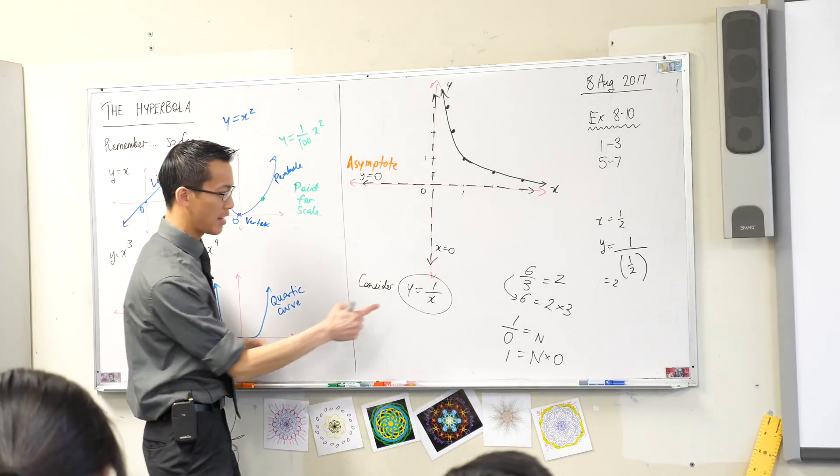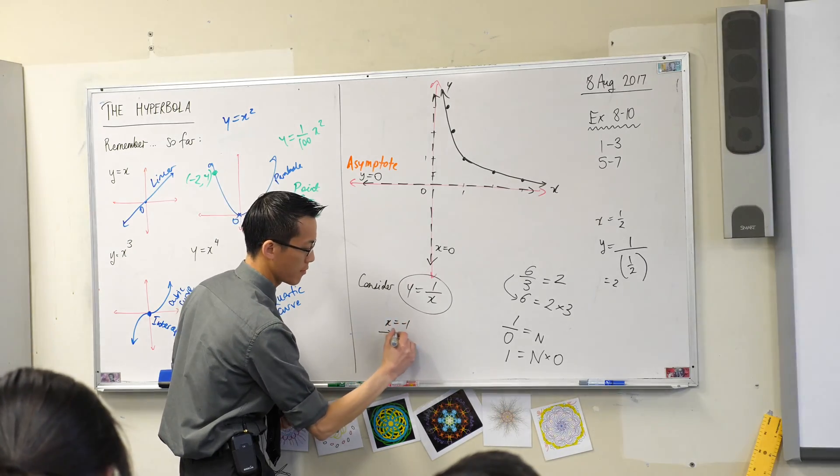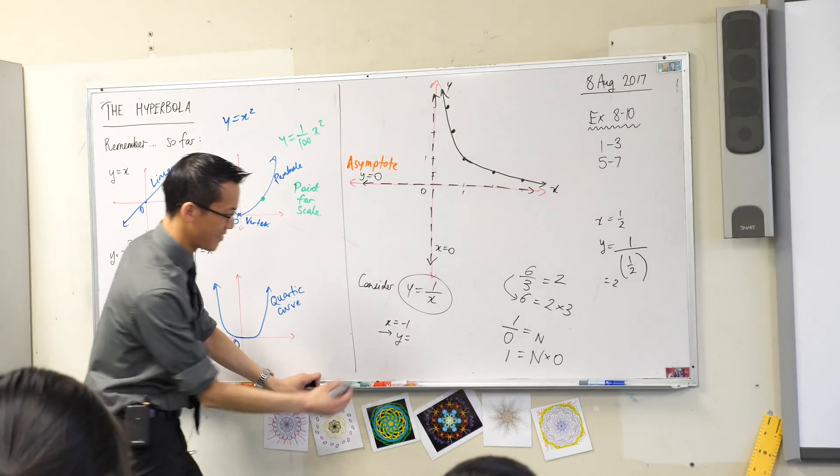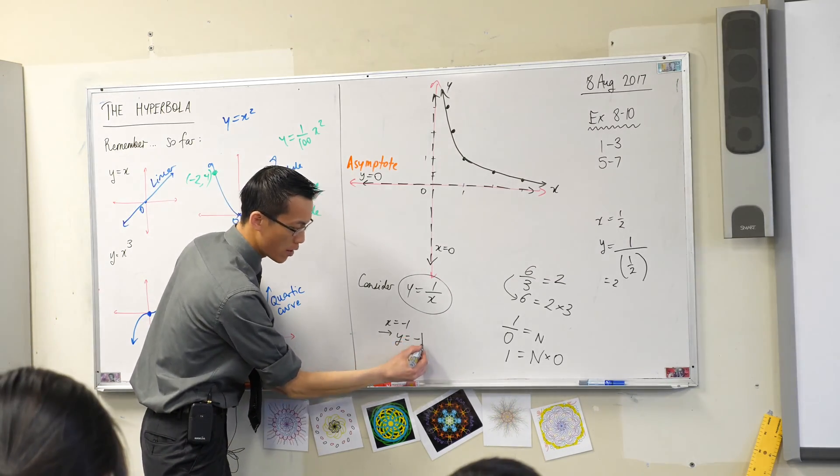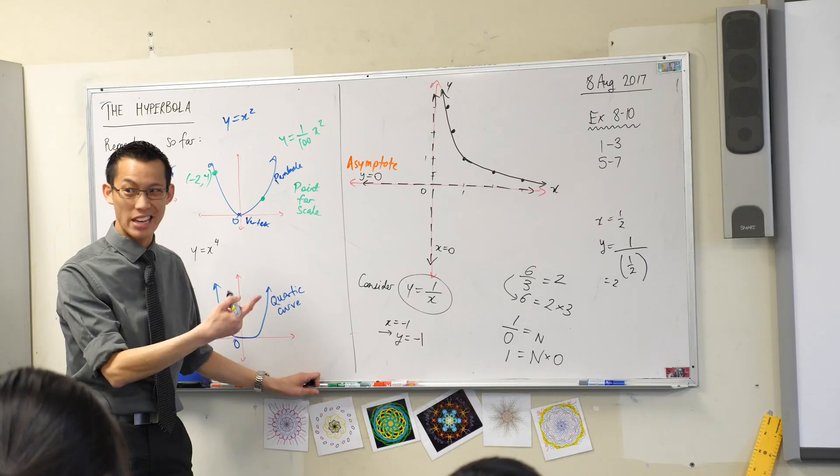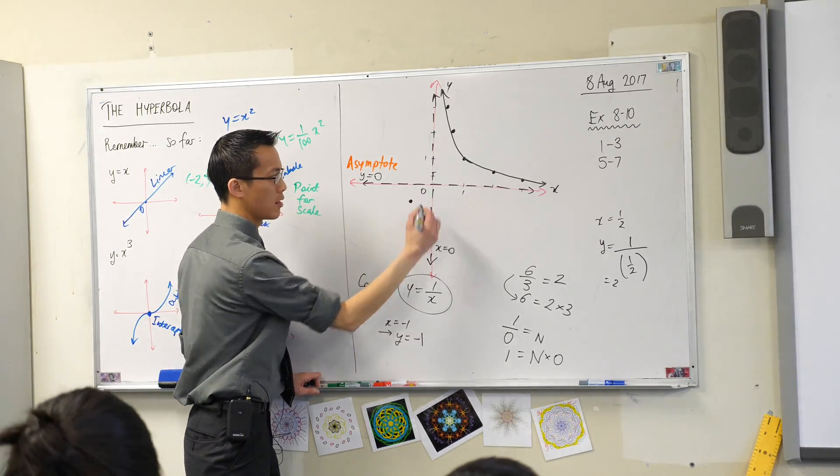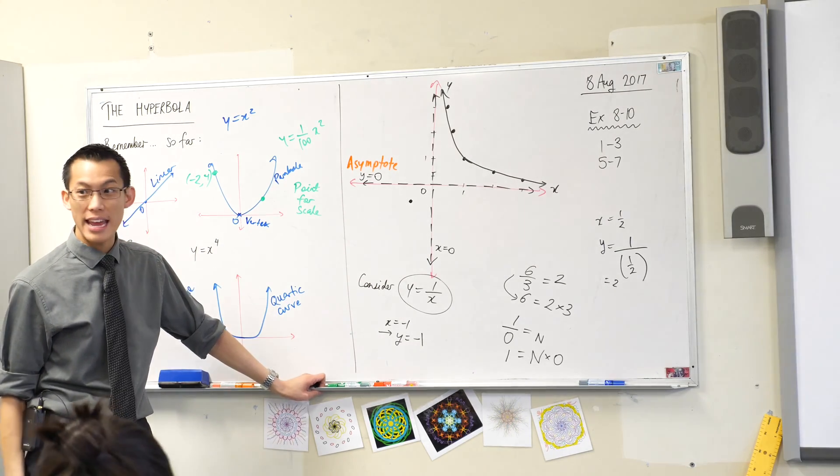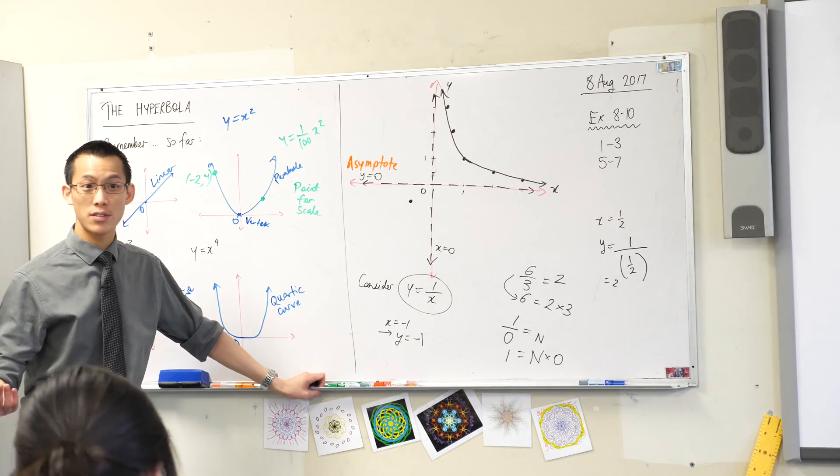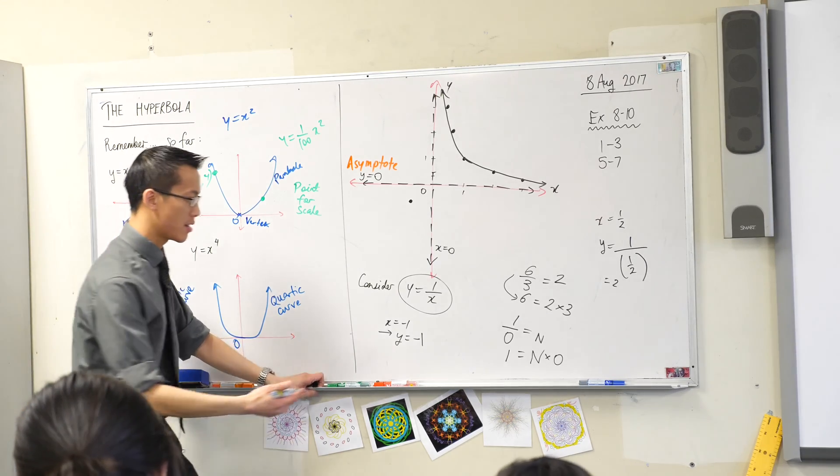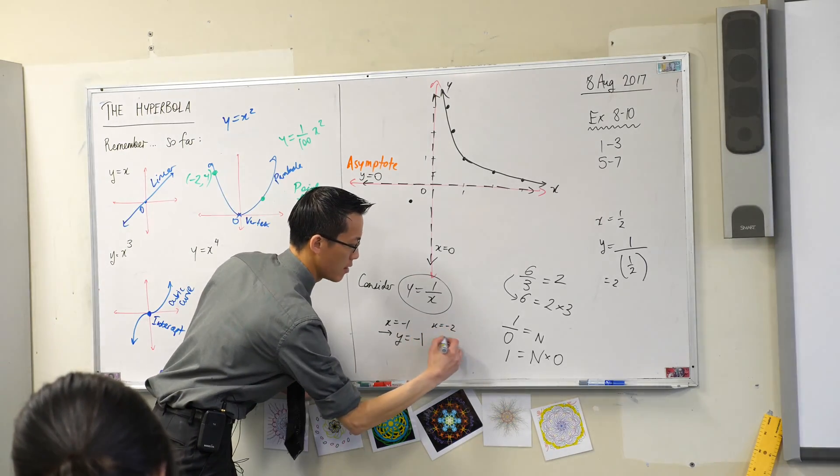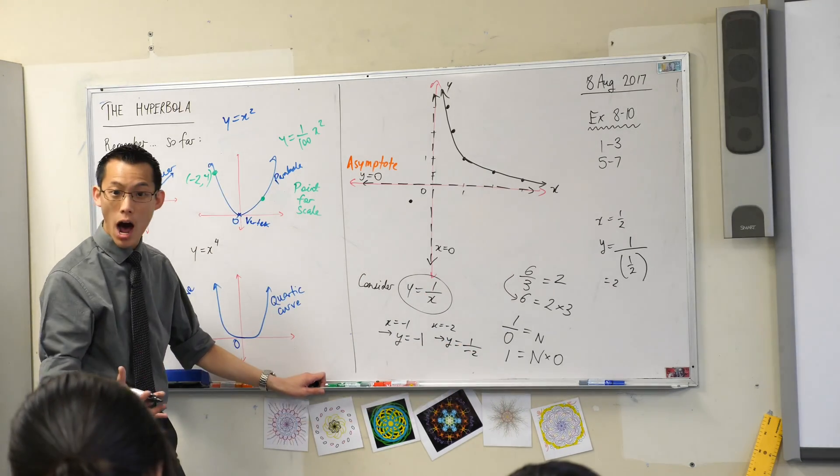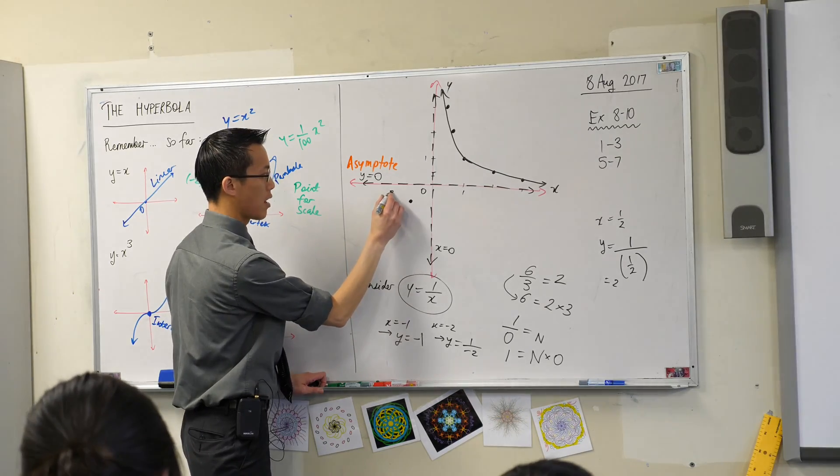When x is equal to negative 1, what will y equal? Y will be 1 over negative 1, which is itself negative 1. So you can put that on. What about x equals, say, negative 2? Y is going to be 1 over negative 2, which is negative 1 half. Negative 1 half. This sounds familiar, doesn't it?